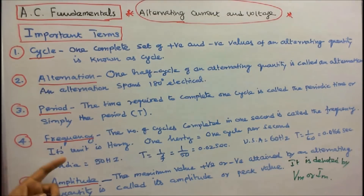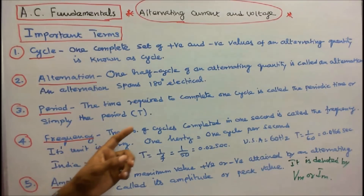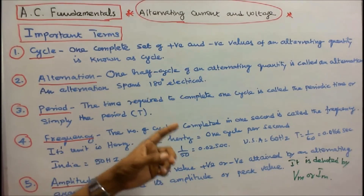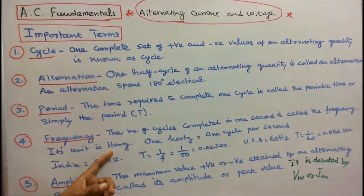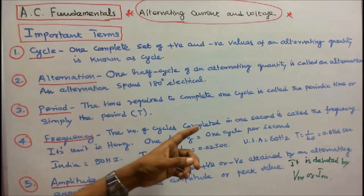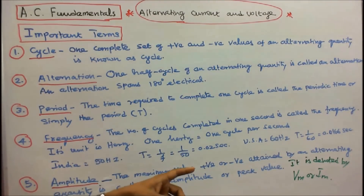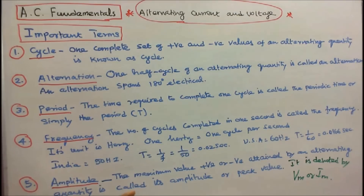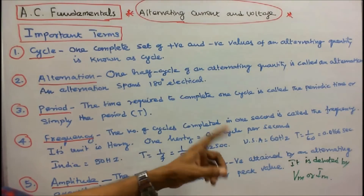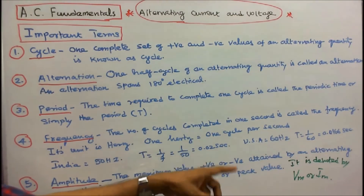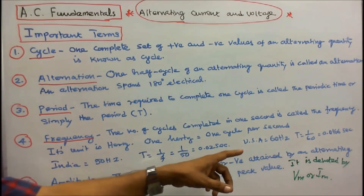Number 4 — Frequency: the number of cycles completed in one second is called the frequency. Its unit is hertz, named after the scientist Hertz. 1 Hz is equal to 1 cycle per second. Number 5 — Amplitude: the maximum value of positive or negative attained by an alternating quantity is called its amplitude or peak value. It is denoted by capital V with subscript m, or I with subscript m.